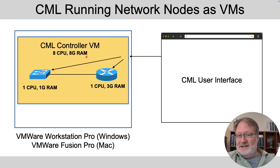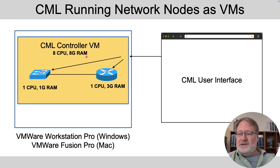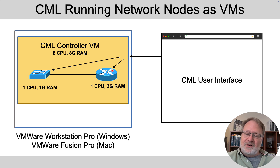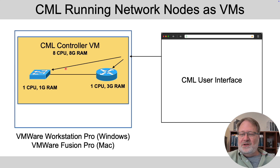CML Free gives you five concurrent running nodes, so maybe that eight CPU and eight gig of RAM suggestion is plenty. In my experience, it is indeed plenty for running CML Free. You bring up those nodes, start them at the CML user interface, and there's a way to click and reach the console of each device from the web browser window.